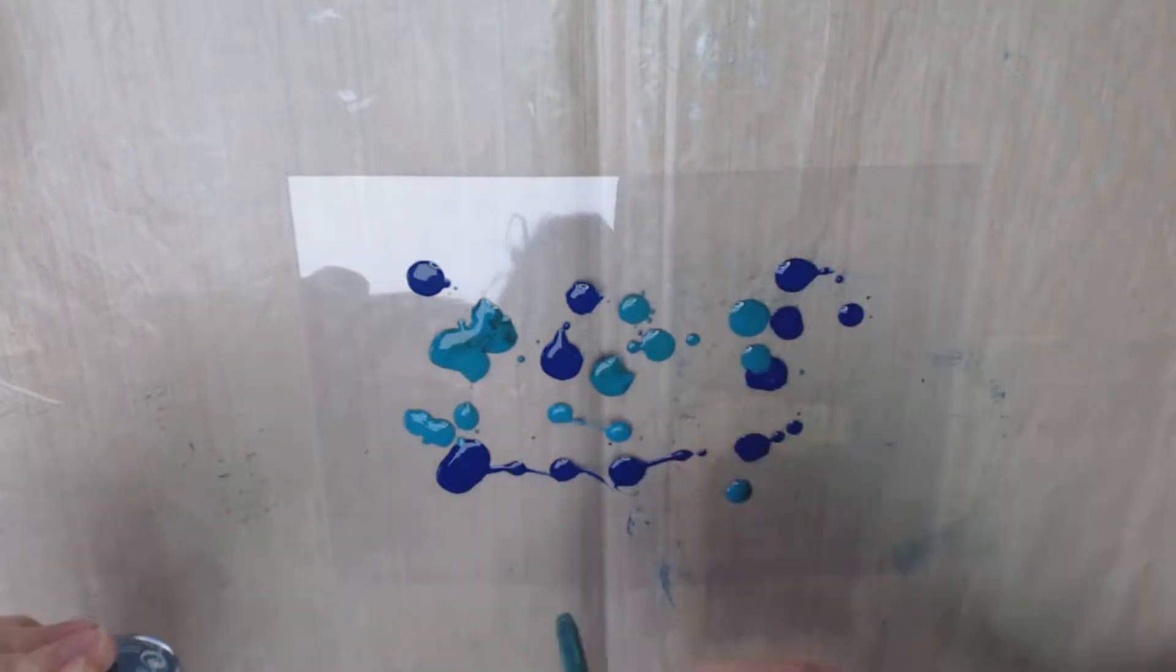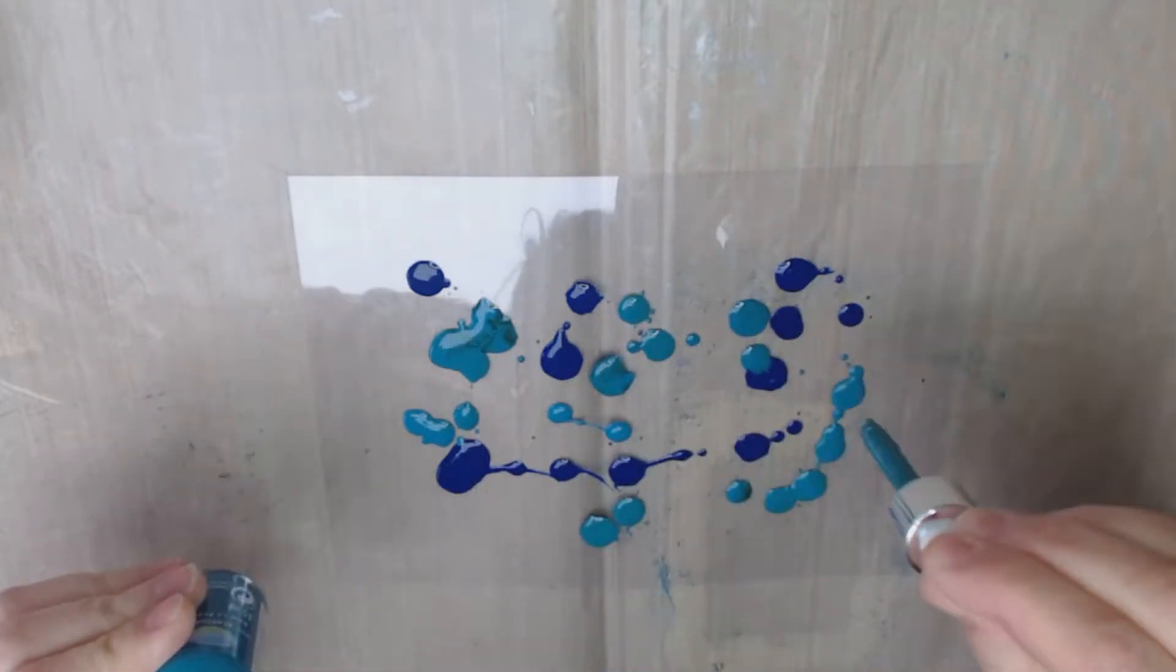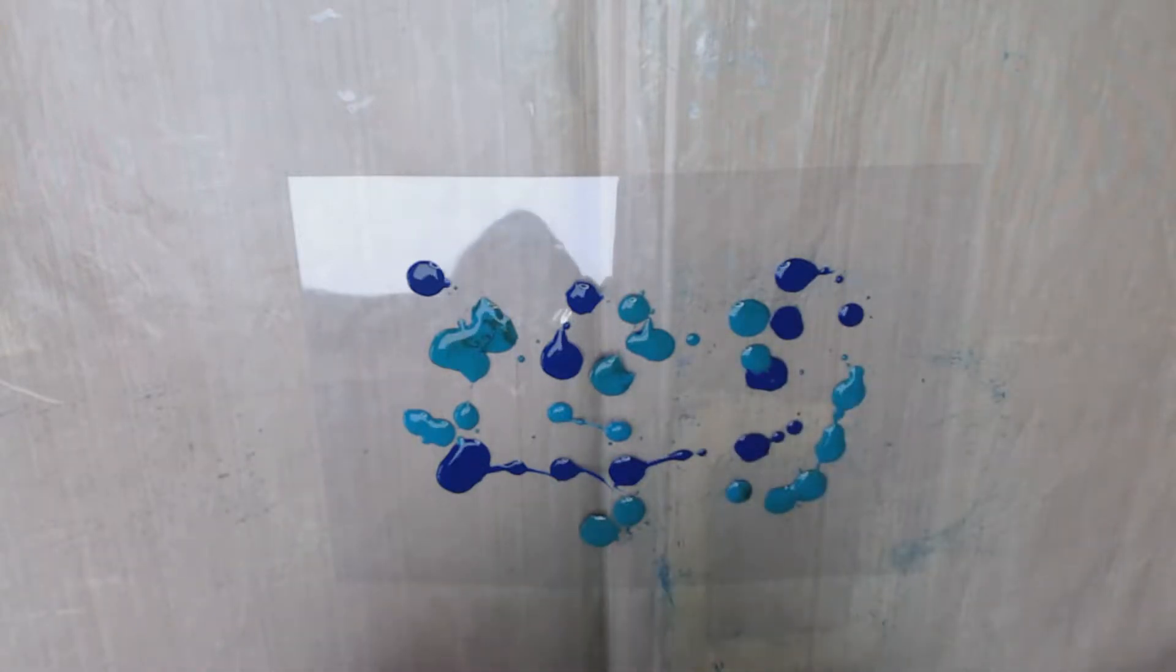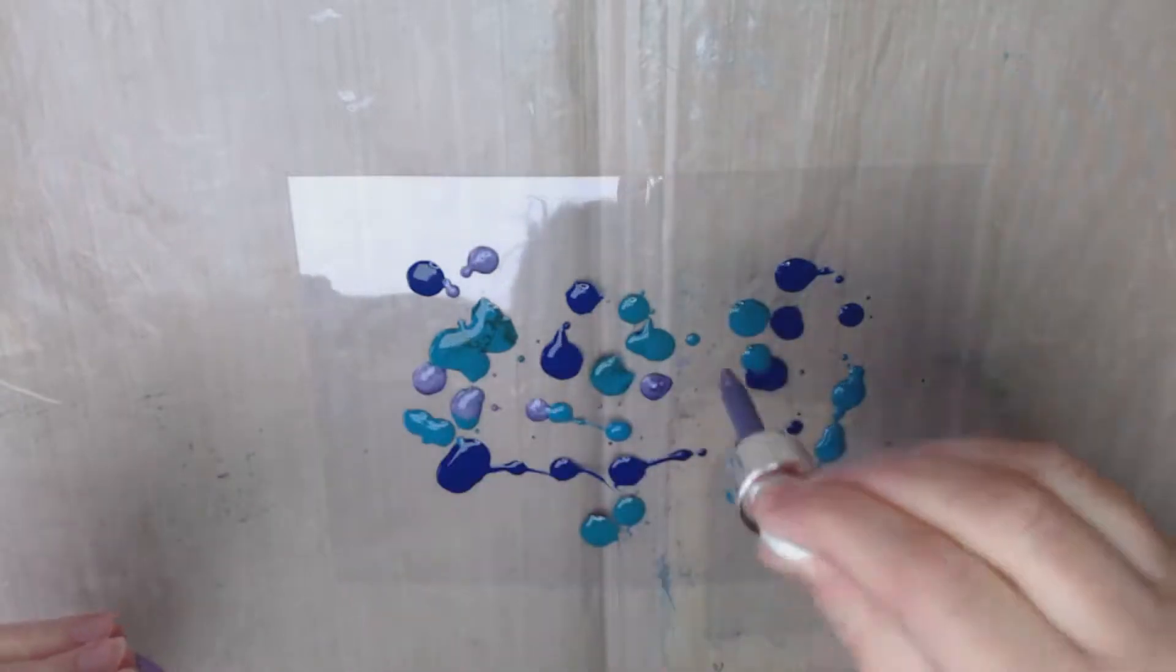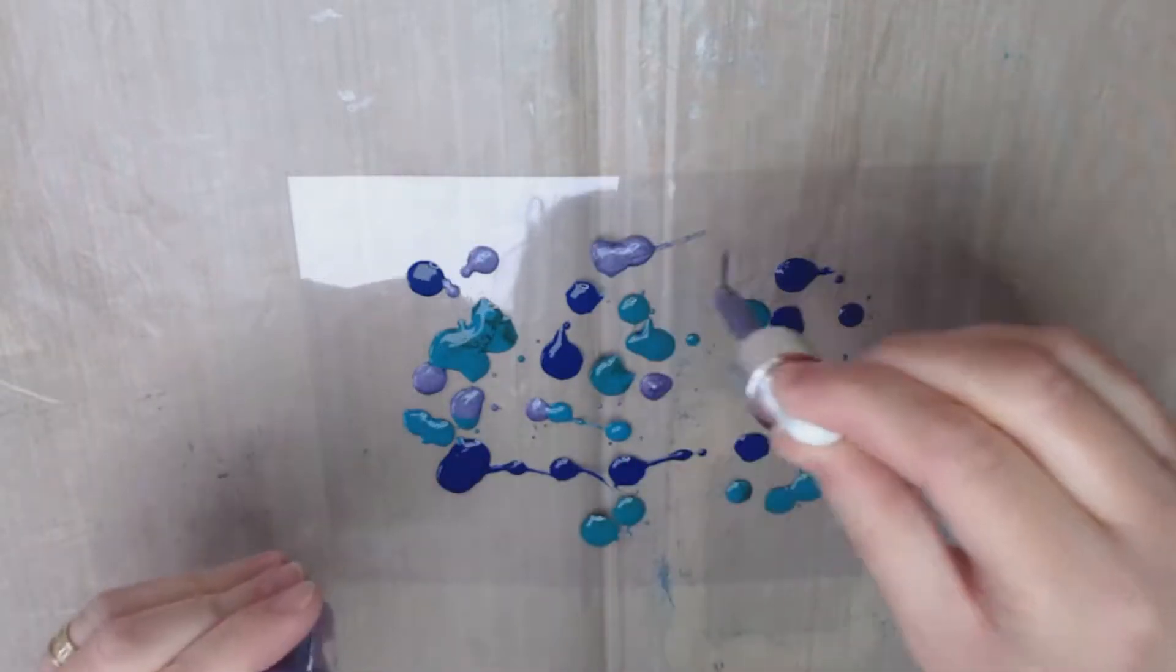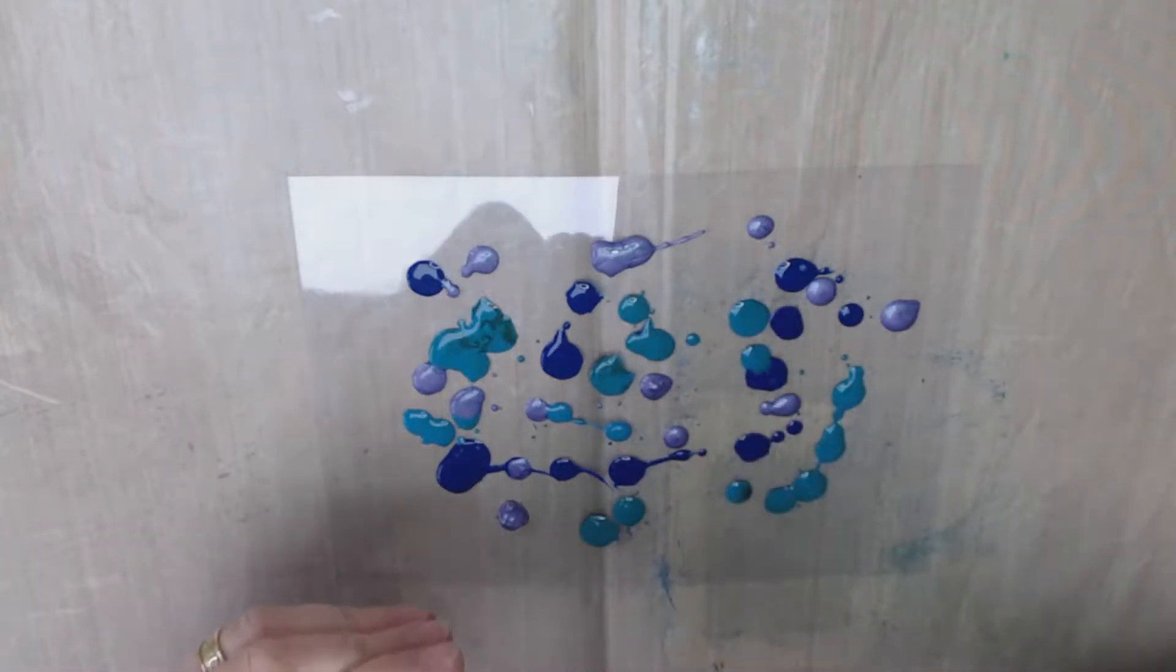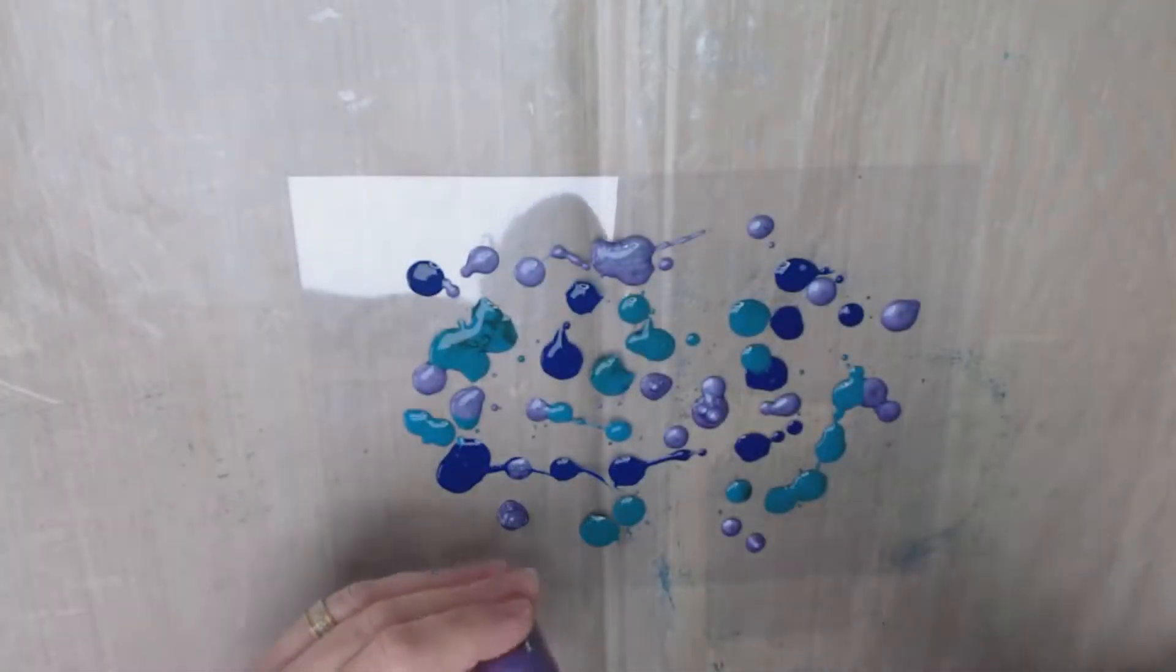I'm using the Iris, the Turquoise, and the Amethyst on this one. You do need to shake the inks before you use them. Some of them have a shimmer to them, and if you don't shake them you don't see that shimmer because it settles at the bottom.